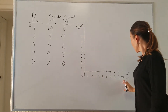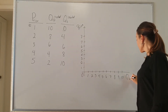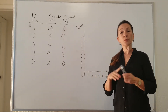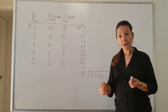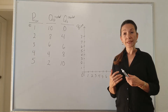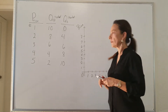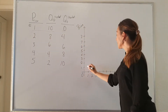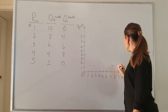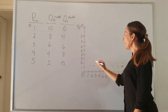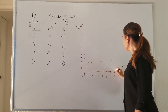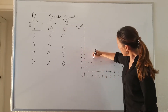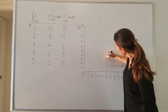Price is on the y-axis and quantity of ice cream cones is on the x-axis. I encourage you to do this on paper by hand to reinforce your graphing skills. At a price of $1, 10 ice cream cones are demanded. At a price of $2, 8 ice cream cones. At a price of $3, 6 ice cream cones are demanded.